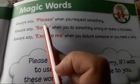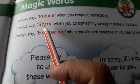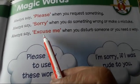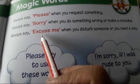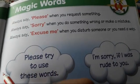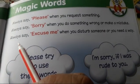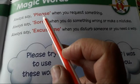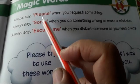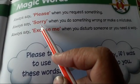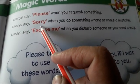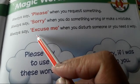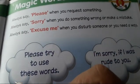Look at here. Please, sorry and excuse me. Kitne magic words hai? Three. First one: Please. Second: Sorry. And third: Excuse me. Ok children.